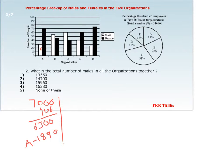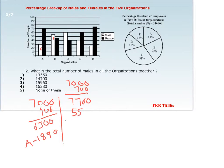For organization B, total employees = 22% of 35,000. Writing 22% as 20% + 2%: 20% = 7,000 and 2% = 700, giving 7,700 total employees. Males are 55% of 7,700. Removing the two zeros, we calculate 77 × 55 = 4,235. This is the total number of male employees in organization B.